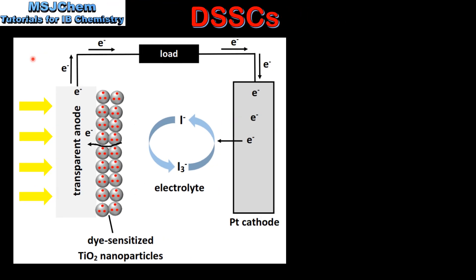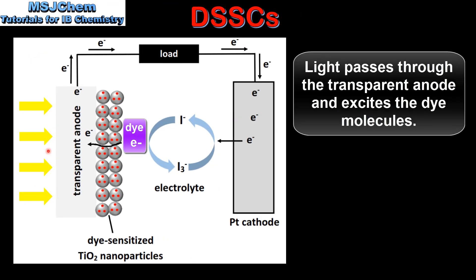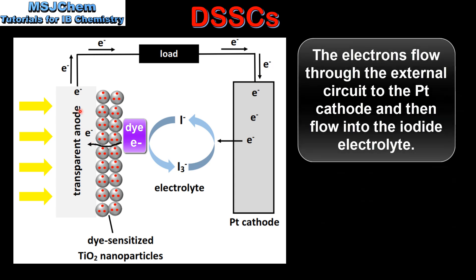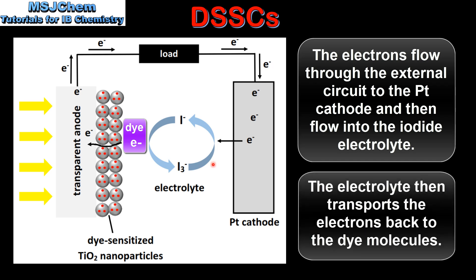Next we look at the operation of a dye-sensitized solar cell. The light passes through the transparent anode and excites the dye molecules. The excited dye molecules inject electrons into the titanium dioxide layer, which acts as a semiconductor. The electrons flow through the external circuit to the platinum cathode. They then flow into the iodide electrolyte. The electrolyte then transports the electrons back to the dye molecules.